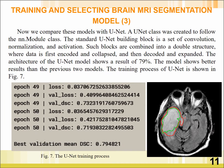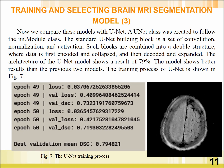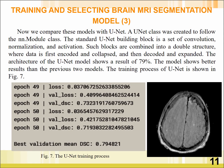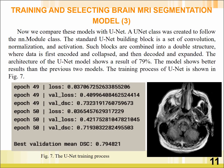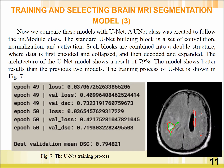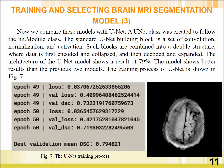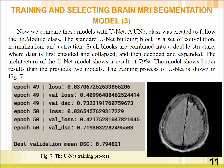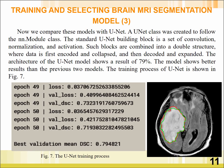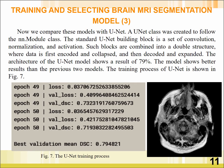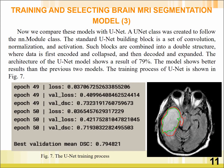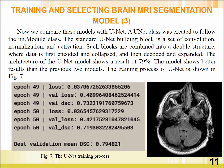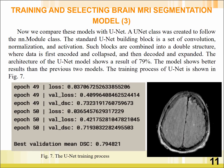Next, we compare these models with UNET. A UNET class was created to follow the neural network model class. The architecture of the UNET model shows a result of 79%, performing better than the previous two models. The training process of UNET is shown in Figure 7.